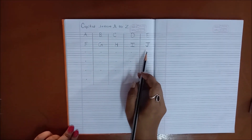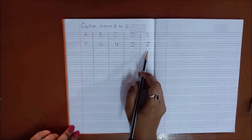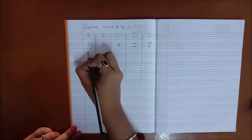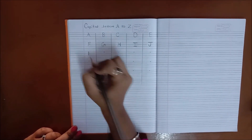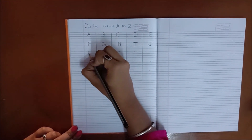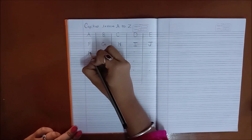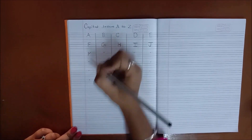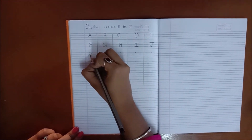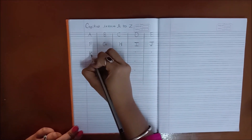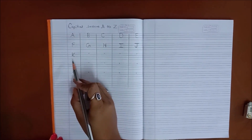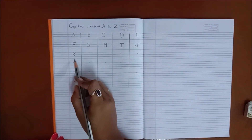Next is letter K. To write letter K, we will make a standing line, then a slanting line like this, and another slanting line. This is called capital letter K.